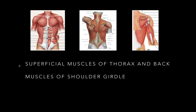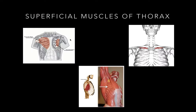In this video I'm going to talk about the superficial muscles of the thorax and the back, and I'm also going to cover the muscles of the shoulder girdle. To start, the first one is the superficial muscles of the thorax. I'm going to first talk about the pectoralis major, and then right behind it you will see musculus pectoralis minor, and I'm also going to talk about musculus subclavicularis and musculus serratus anterior.